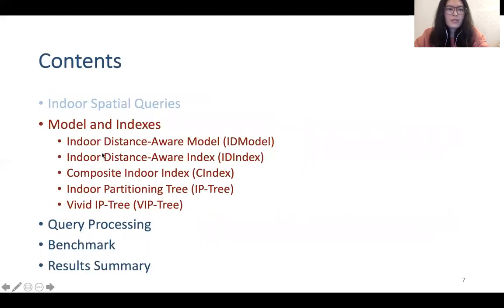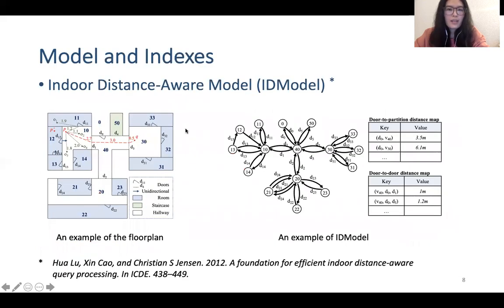Then we talk about indoor models and indexes. The first one is ID model. It's a kind of graph-based model. Each vertex represents a partition, like a room or a hallway. Then each edge represents a door, and there are two functions. One returns door-to-partition distance, and the other one returns door-to-door distance.